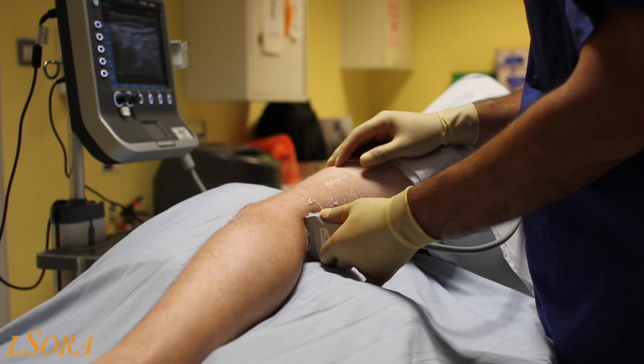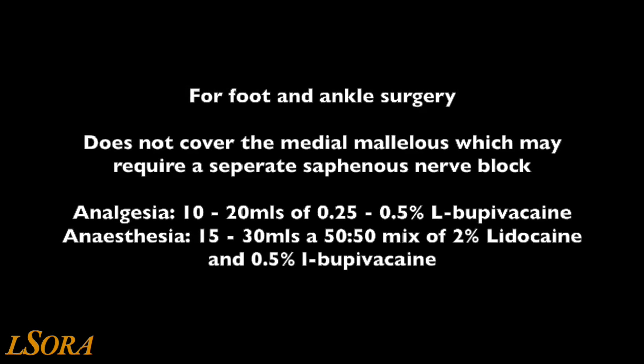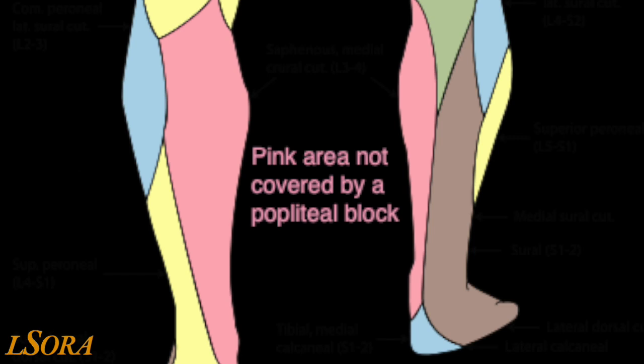In this video, we will show you how to scan and the sonoanatomy required to perform a popliteal sciatic nerve block. This is an excellent block for foot and ankle surgery, either as analgesia in addition to a general anaesthetic, or as a sole mode of anaesthesia. It does, however, not cover the area innervated by the saphenous nerve, the terminal branch of the femoral nerve, which is highlighted in pink.